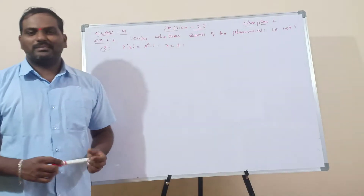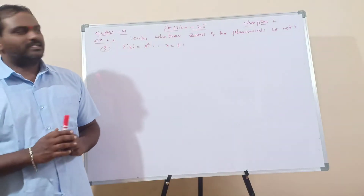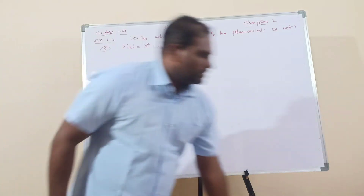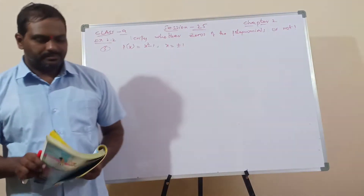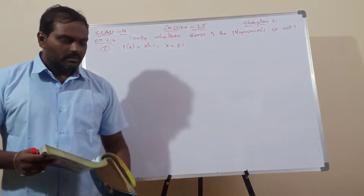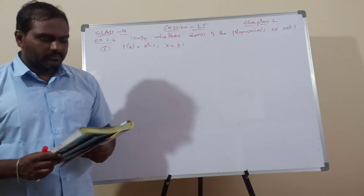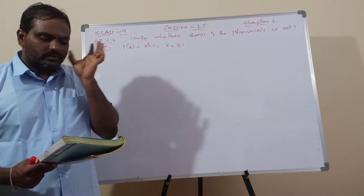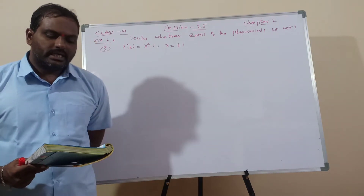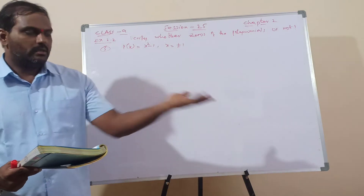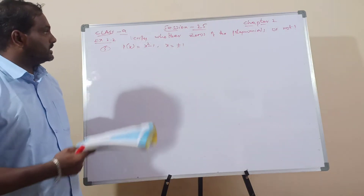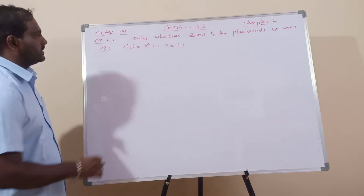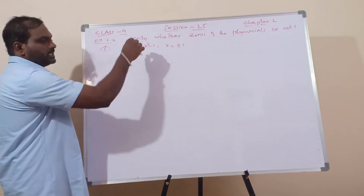Hello children, welcome to the next session, session number 25, chapter 2. We are discussing exercise number 3: verify the values of x given in each case are the zeros of the polynomial or not. In the previous session, session number 24, I explained the first two questions. Next I am going for the third question, so it is a continuation.